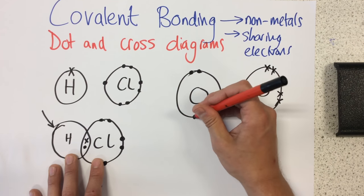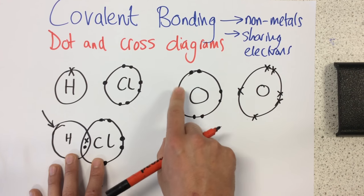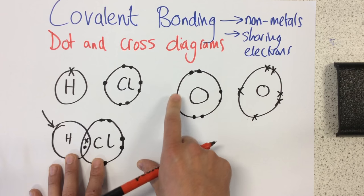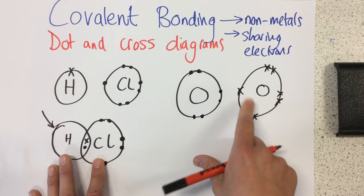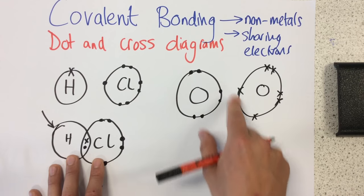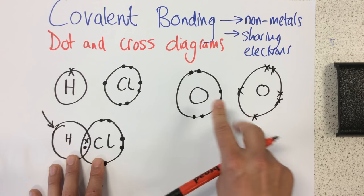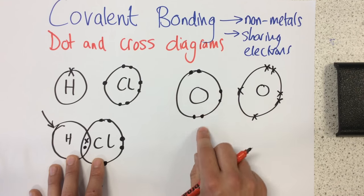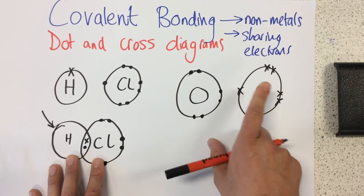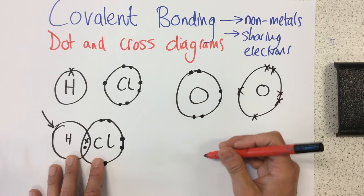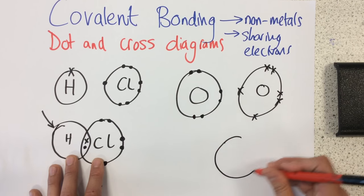So we can see that this oxygen atom needs two more electrons to have a full outer shell. And this oxygen atom also needs two more electrons to have a full outer shell. So they are going to share. This time, this one is going to share two with this oxygen, and this oxygen is going to share two with this oxygen. So let's draw them.